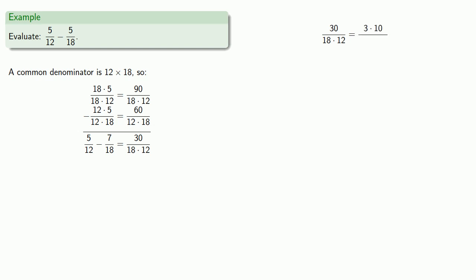That's three times ten, and three is a factor of eighteen. So I can factor eighteen as three times six, leave the twelve alone, remove the common factor.